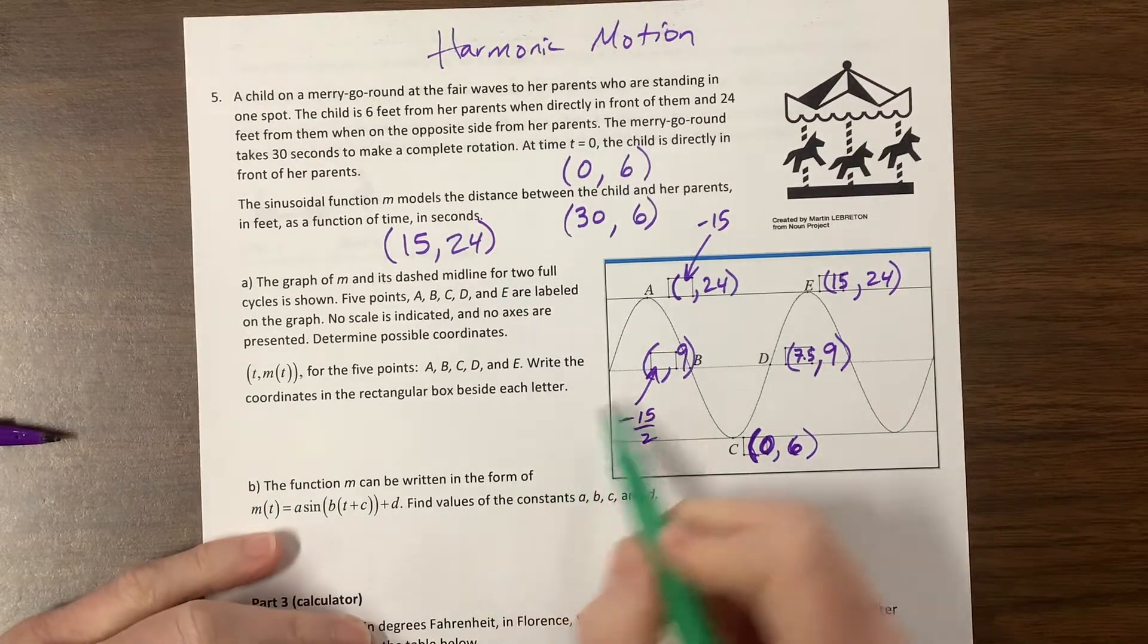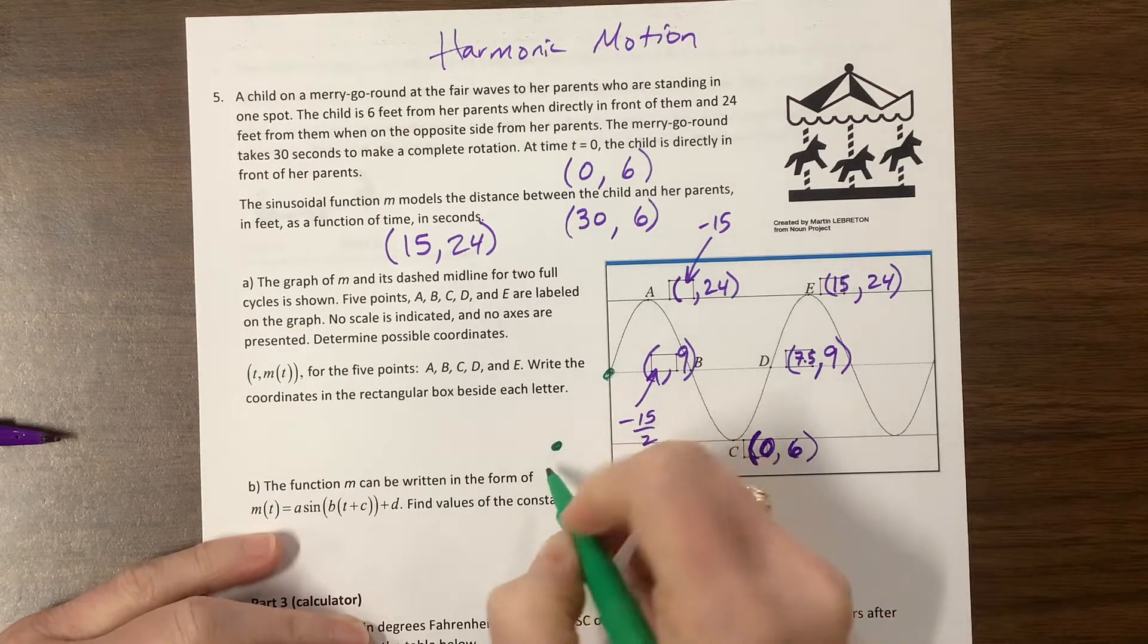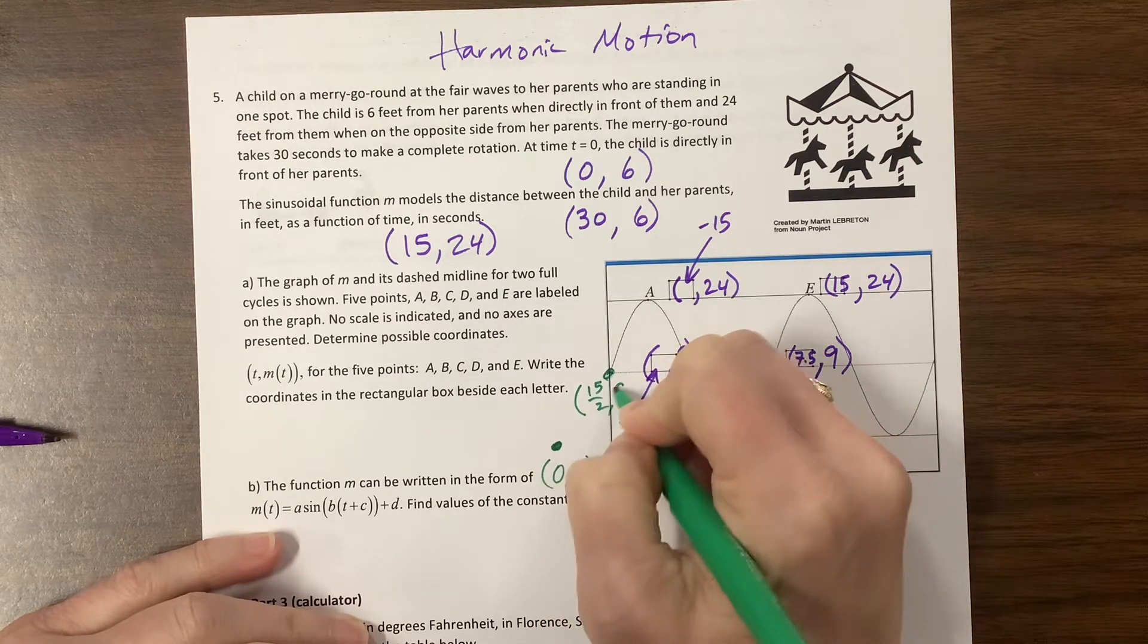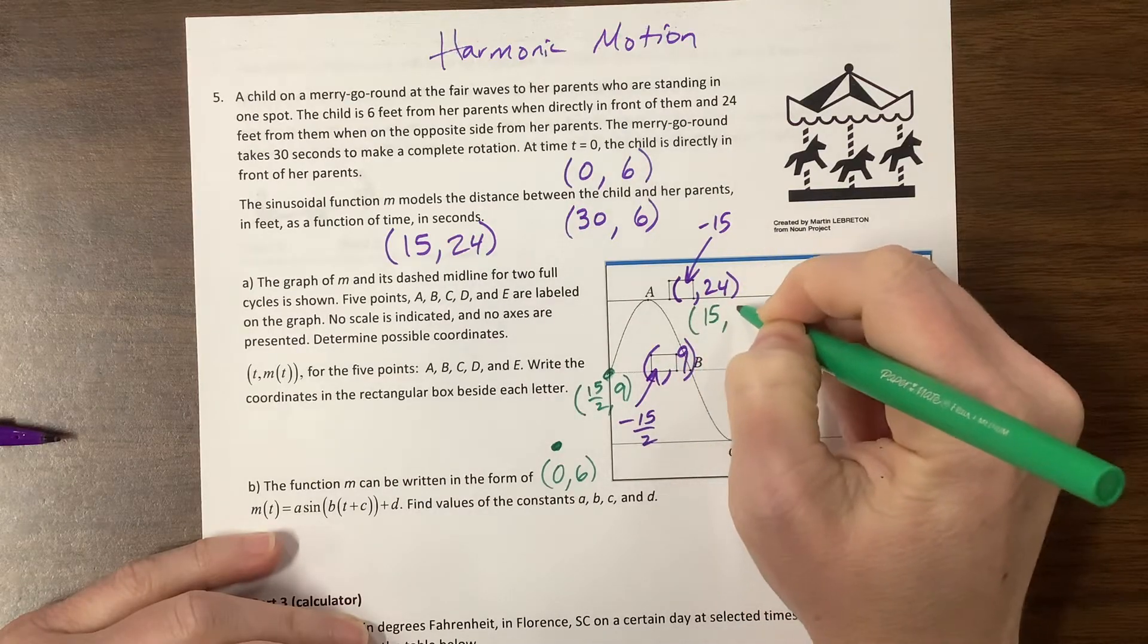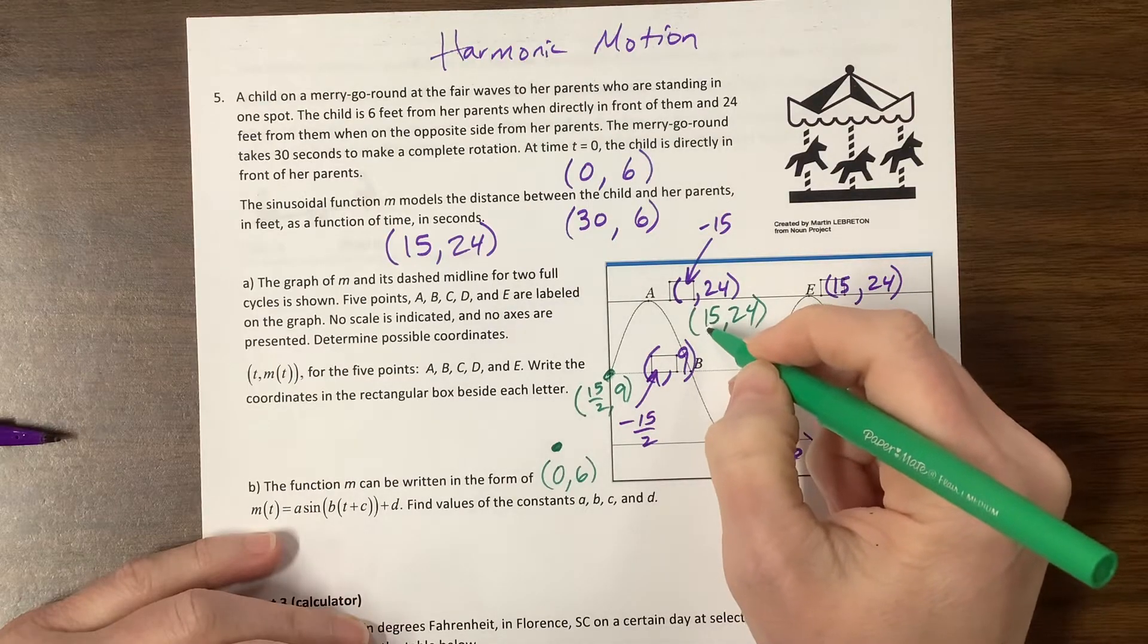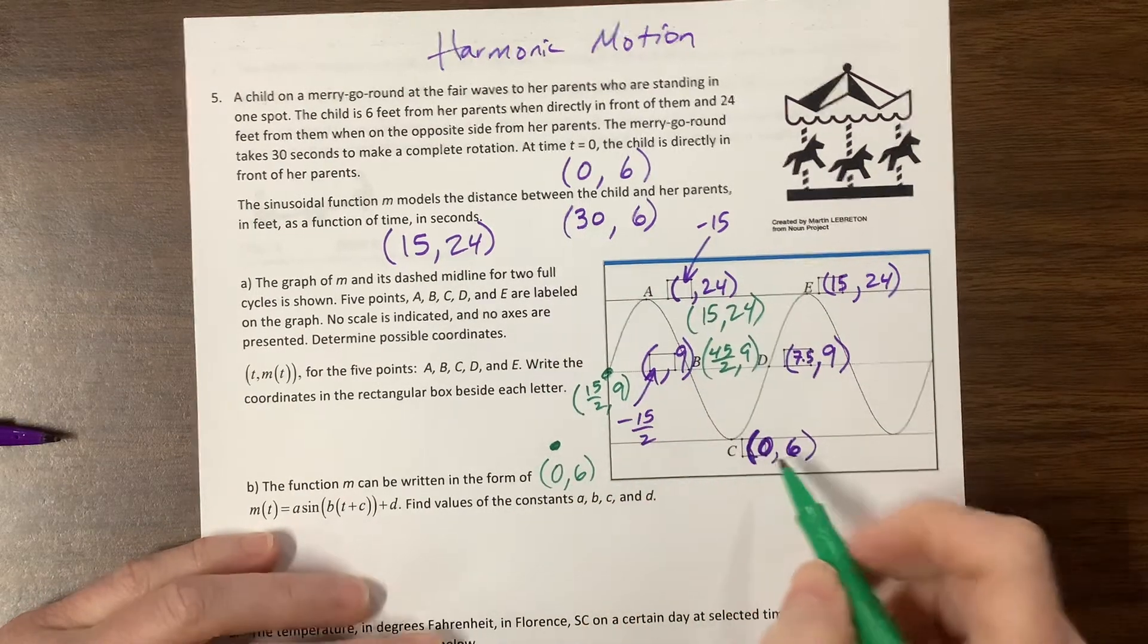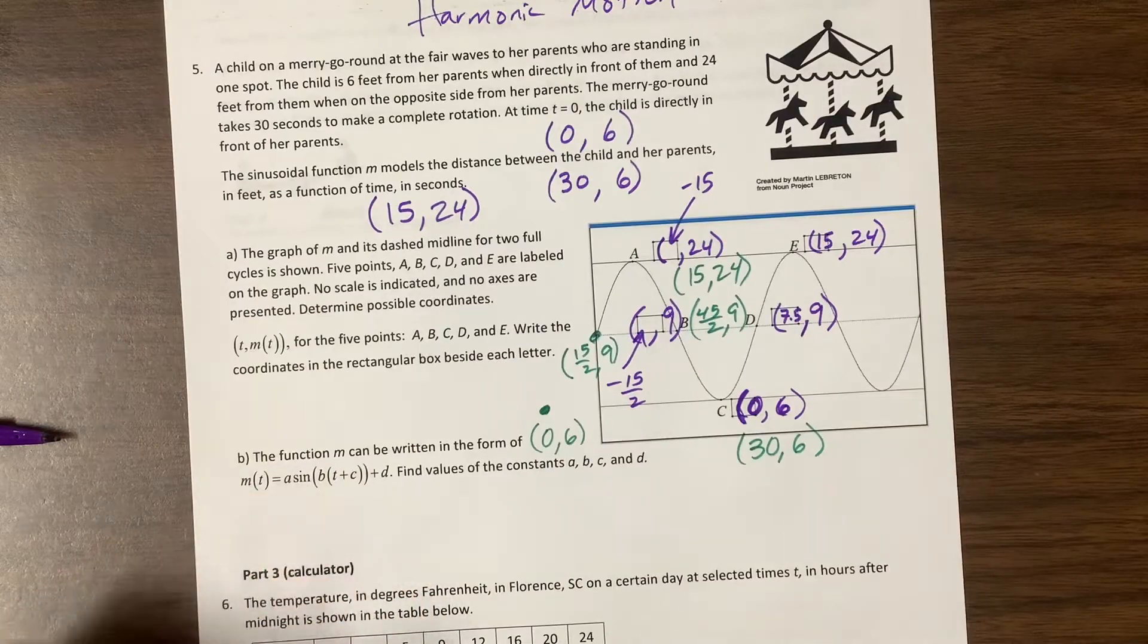Then we could back this up and say, here's this point, and then here's this point. We could say this is time zero. We could say this is 0, 6. We could say that this is 15 over 2 comma 9. We could say that this is 15, 24. We could say that this one is 15, that's 30, 45 over 2, comma 9. Then this becomes, so she's done one full rotation in 30 seconds. So this is 30 comma 6. So that's another way to write that.